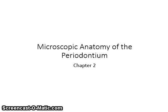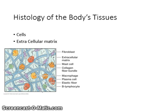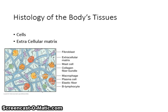Chapter 2 covers the microscopic anatomy of the periodontium. Cells are the smallest structural unit of living matter capable of functioning independently. Cells group together to form tissue. The four basic types of tissue are epithelium, connective tissue, nerve tissue, and muscle tissue. Tissues are not made up solely of cells.